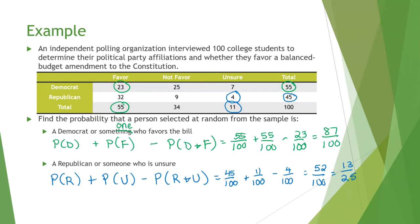The word 'or' is very important here. If it said the probability of someone being a Republican and unsure, that would be 4 out of 100. But if it says Republican or unsure, it could be one or the other, and then you subtract the overlap. There's a big difference between 'or' and 'and,' so you have to really pay attention to that.